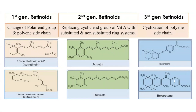For the first generation of retinoids, manipulation of the polar end-group on the right-hand side of the molecule forms this generation. The two key ones include 13-cis-retinoic acid, which is isotretinoin, all-trans-retinoic acid, which is tretinoin, and alitretinoin, which is 9-cis-retinoic acid. These different compounds were generated by changing the polar end-group and the side chain of the basic retinoid structure.